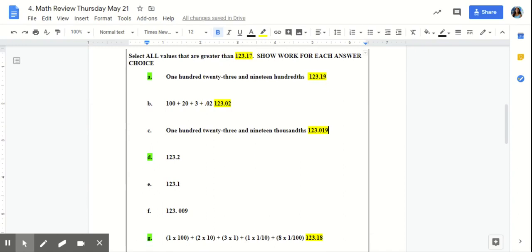Our first problem today asks us to select all values that are greater than 123.17. Show your work for each answer choice. Answer A is written in written form. We must change our answer choice from written form to standard form.